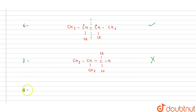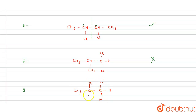The eighth isomer looks like CH3-CCl(H)-CH(Cl)-CH3 in a branched arrangement. This is also not a meso compound, because no plane of symmetry is present and the relevant carbons are not chiral centers.